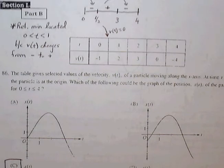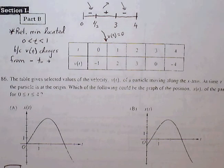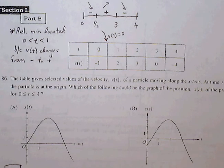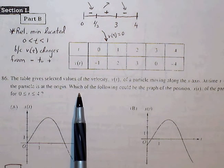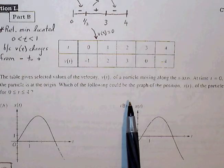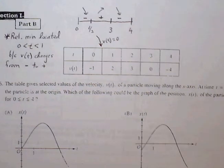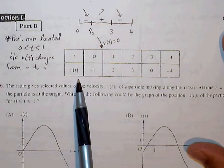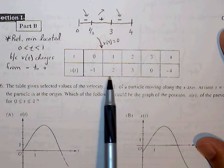Moving on to 86, we have a table of values where we're given the velocity, selected values from the velocity graph. And at time t equals 0, the particle is at the origin. Which of the following could be the graph of the position function of the particle for t between 0 and 4?